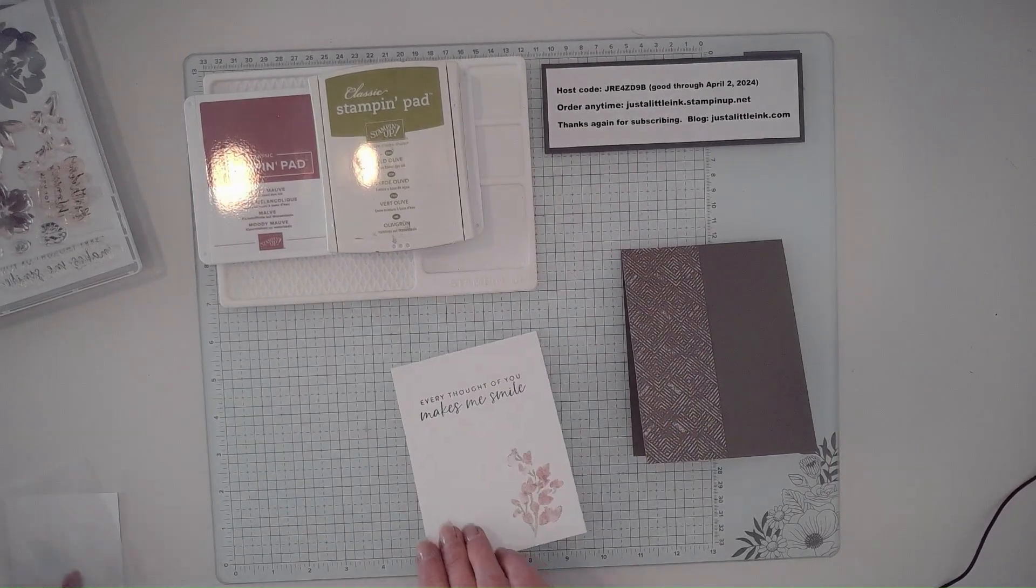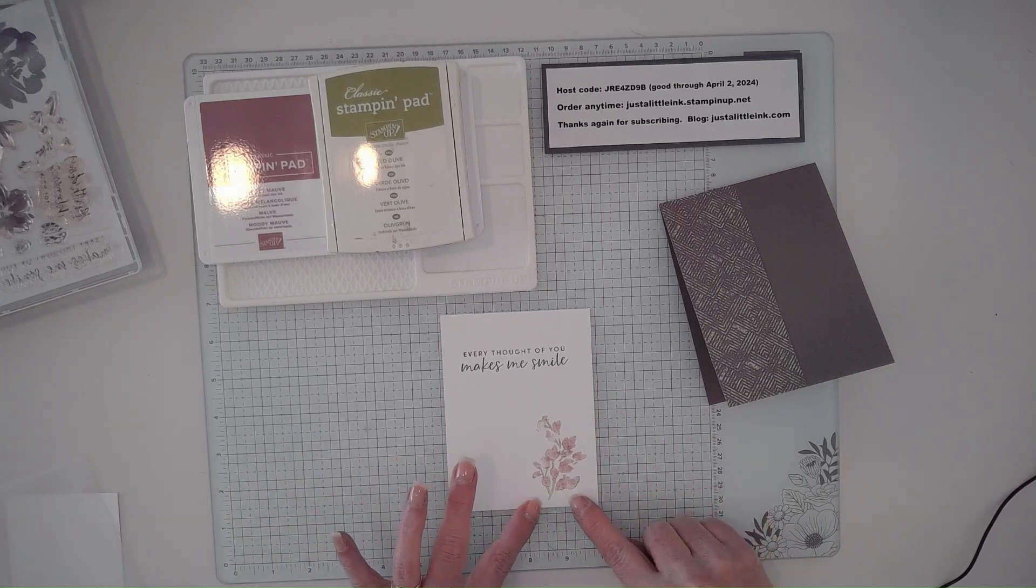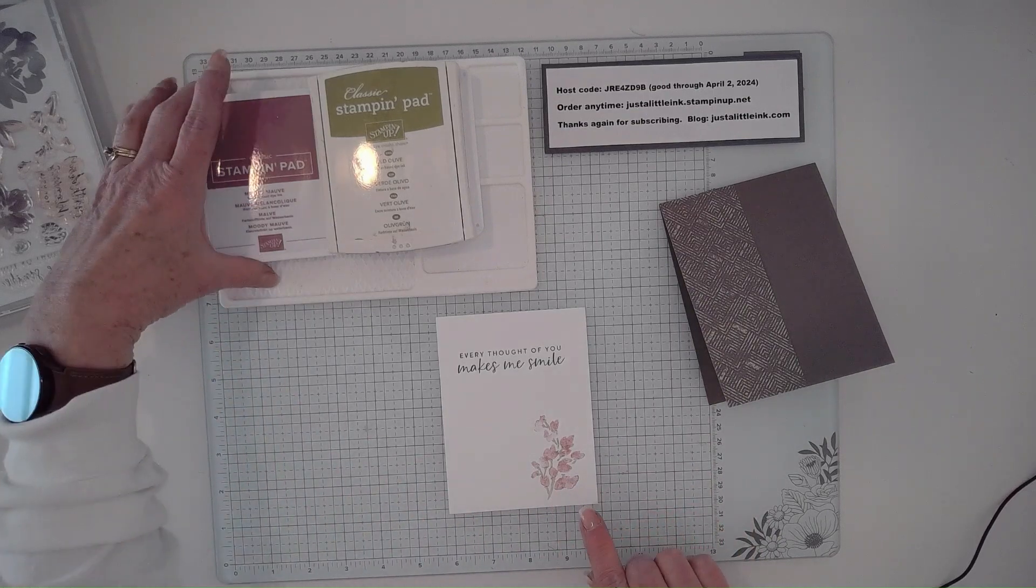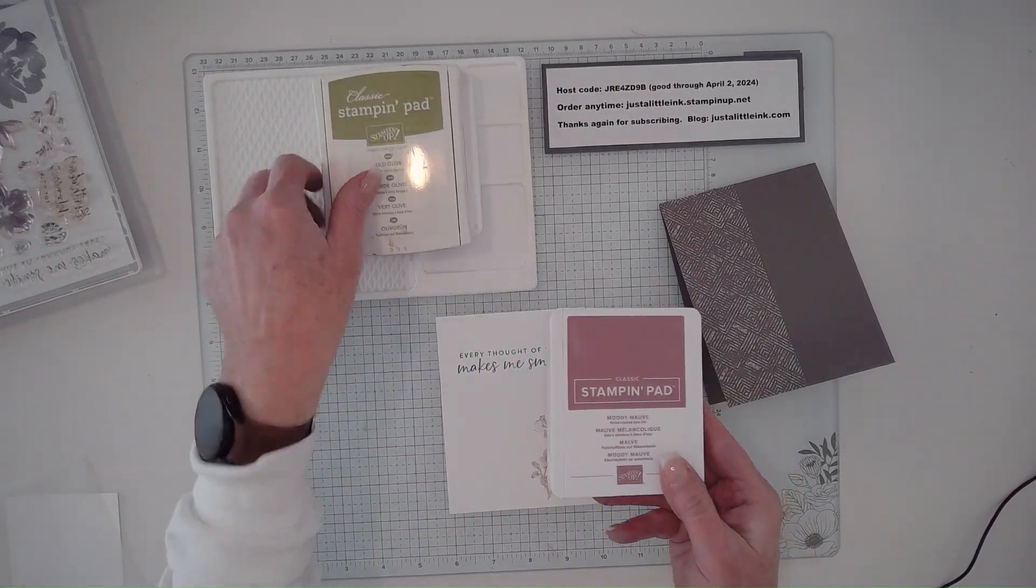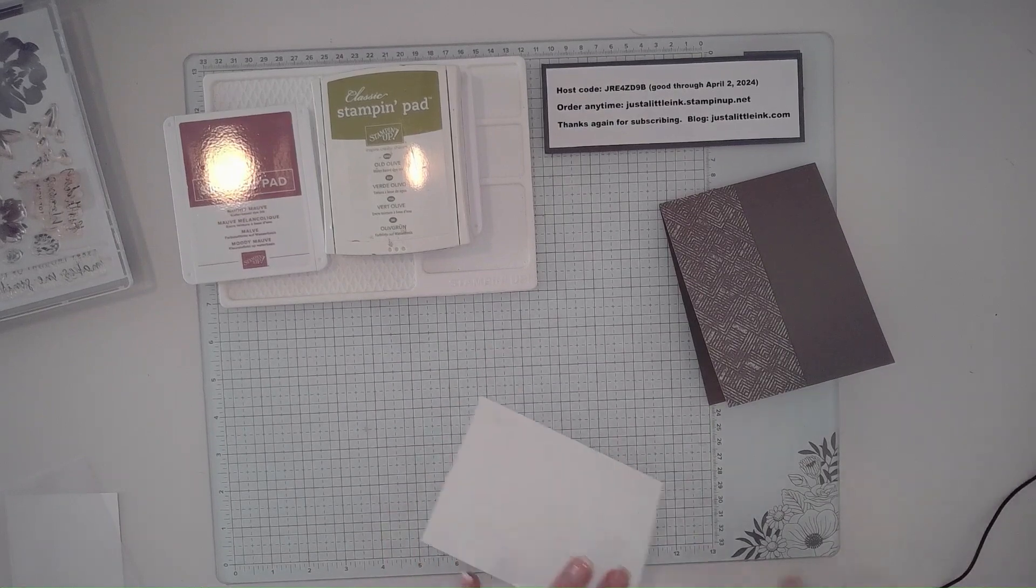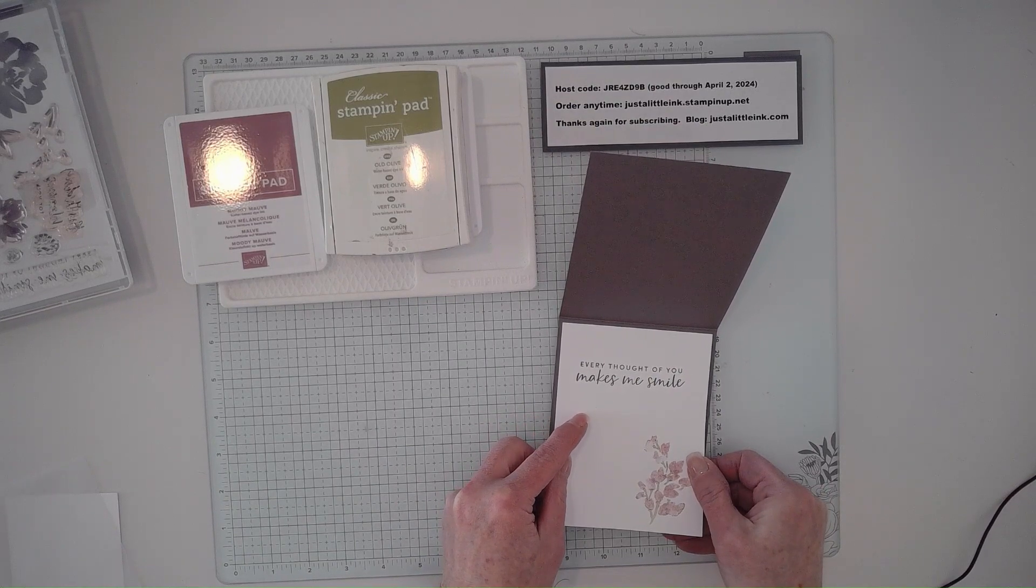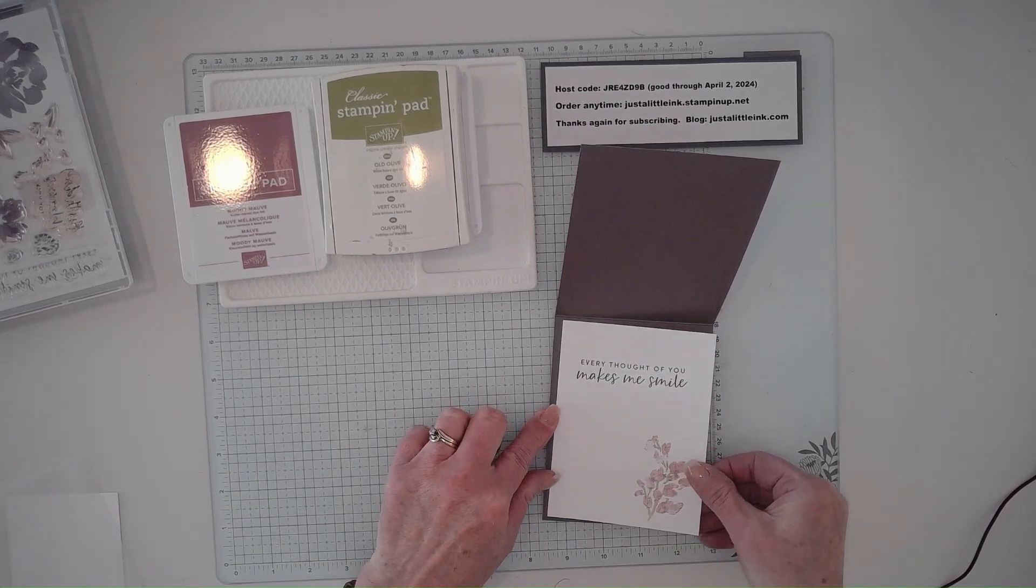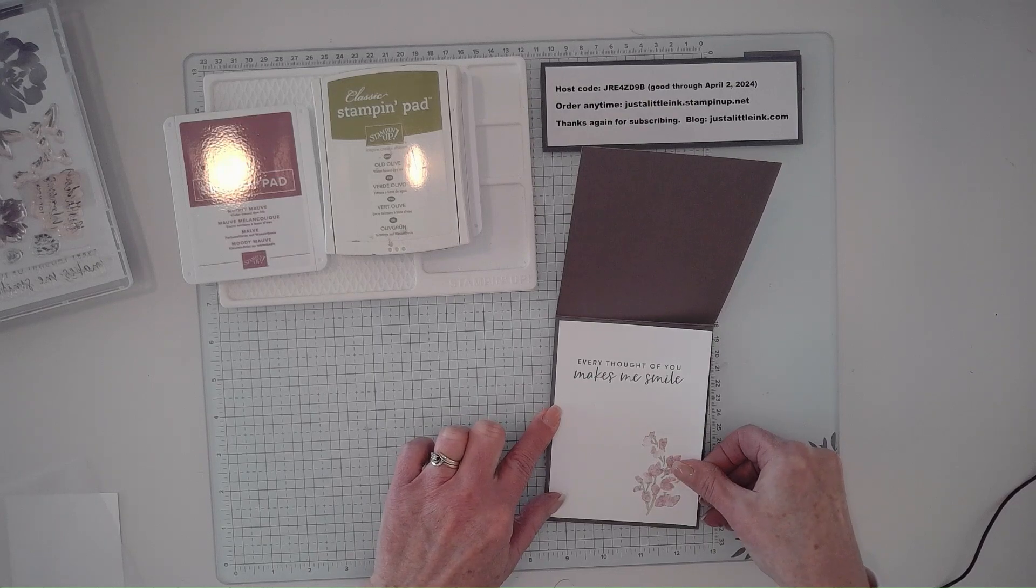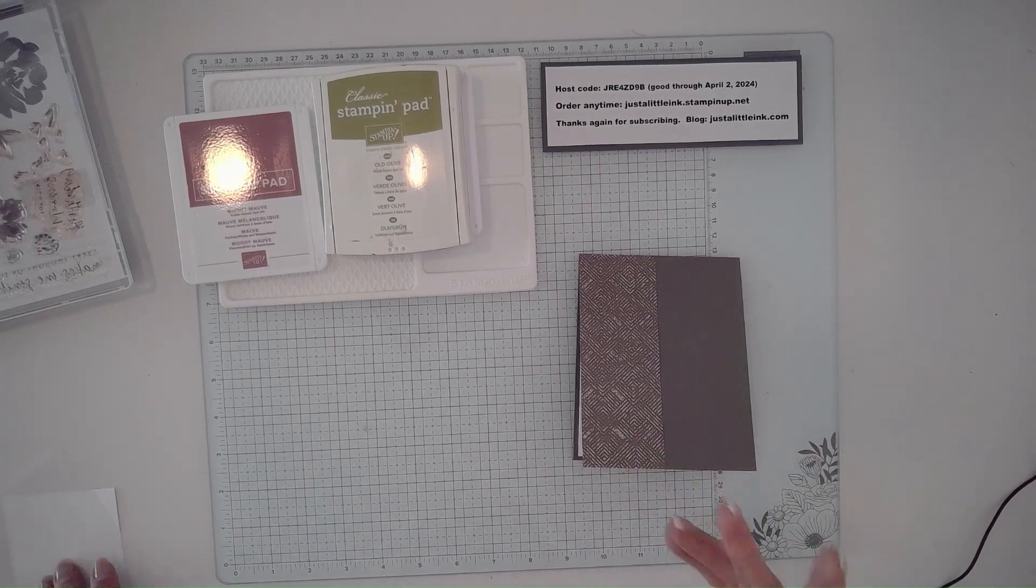I've already gone ahead and stamped for my inside 'Every thought of you makes me smile' with the two-step stamp set. What I did is it's the same colors here, but I've stamped off once before I stamped it down. Did you know that's a way to get more colors from the colors you already have? You can stamp off onto a scrap piece of paper and get one shade lighter. If you do it twice, you get two shades lighter.